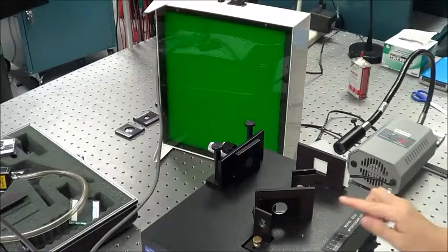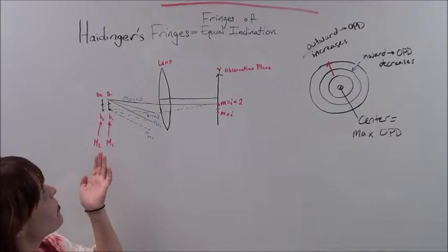Here's our mercury source, our white light source, mirror 1, mirror 2, beam splitter, and compensating plate.